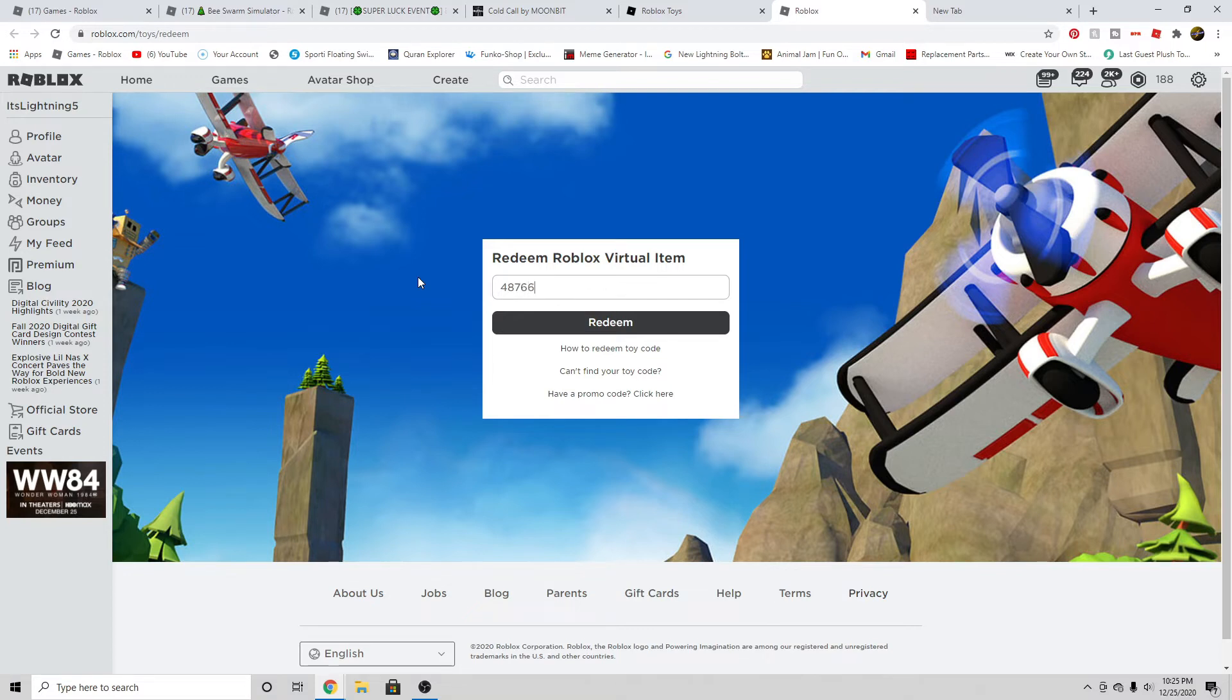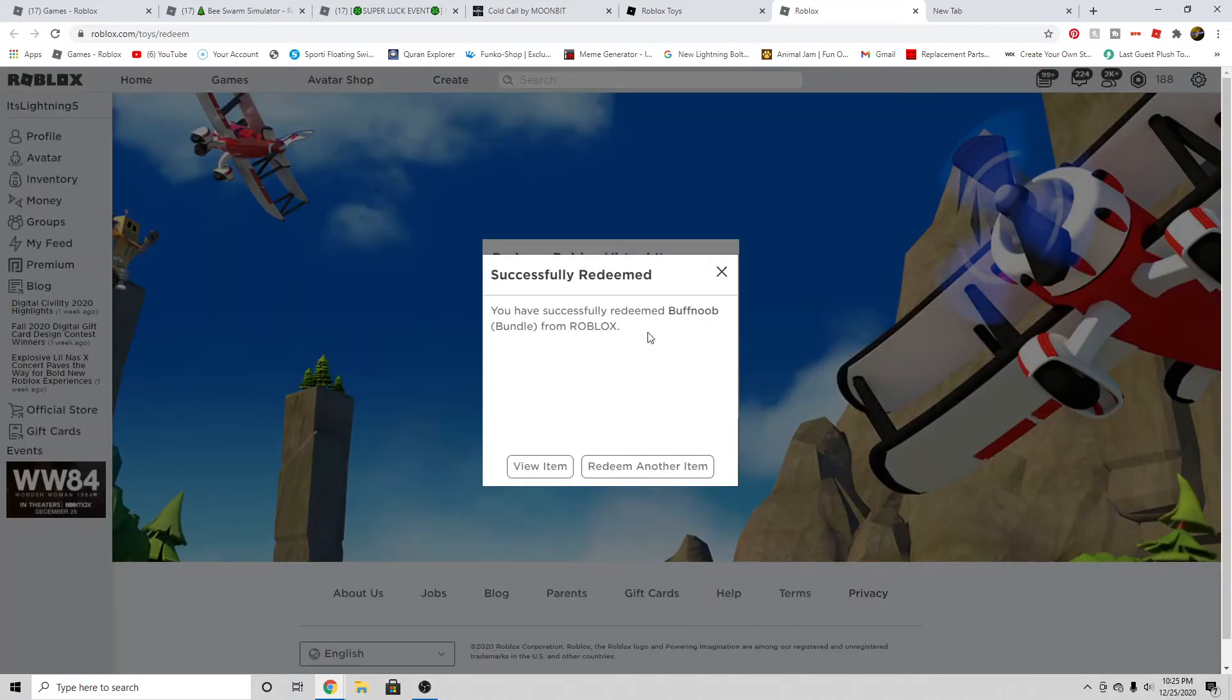The code is 766-580-4097. Let's click redeem and we got ourselves the item. This is the item right here - let's view it.